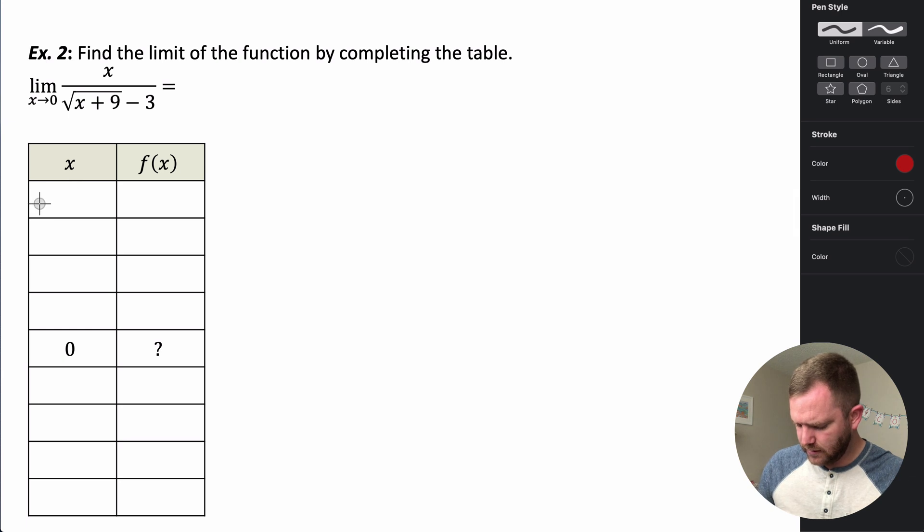Let's go like negative 0.25, negative 0.1, negative 0.01, negative 0.001, right? So those are getting closer and closer to zero. They're getting smaller and smaller in the negative direction.